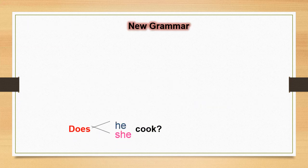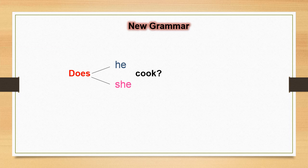يلا مع بعض نشوف ايه القاعدة الجديدة اللي عندنا النهاردة. We will ask and answer about what someone does. When we ask about what one does, we will use does and he or she. Then the verb. But look here. The verb without any addition. يعني لما بنيجي نسأل، ما بنضيفش اس للفعل في السؤال. We don't add s to the verb in the question. We add it only in statements.